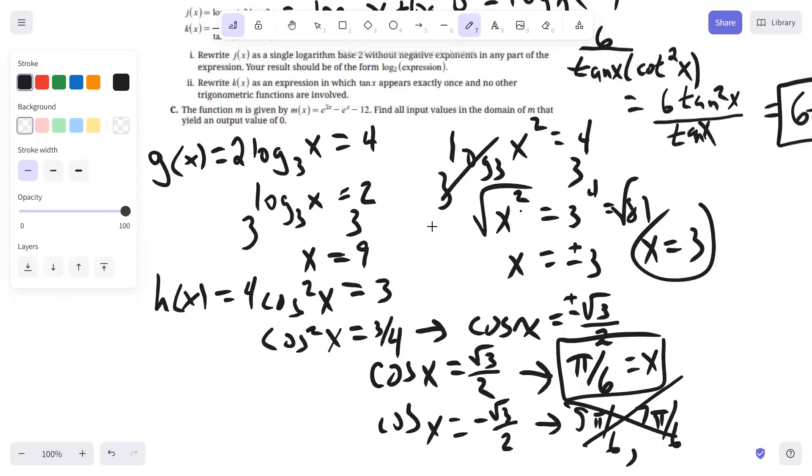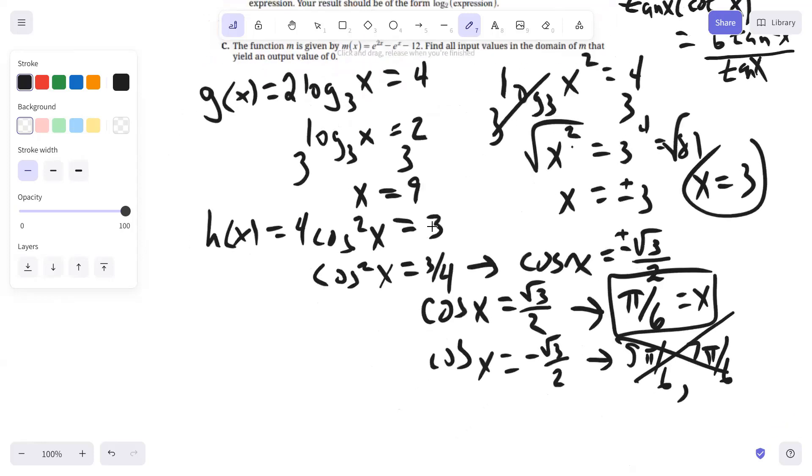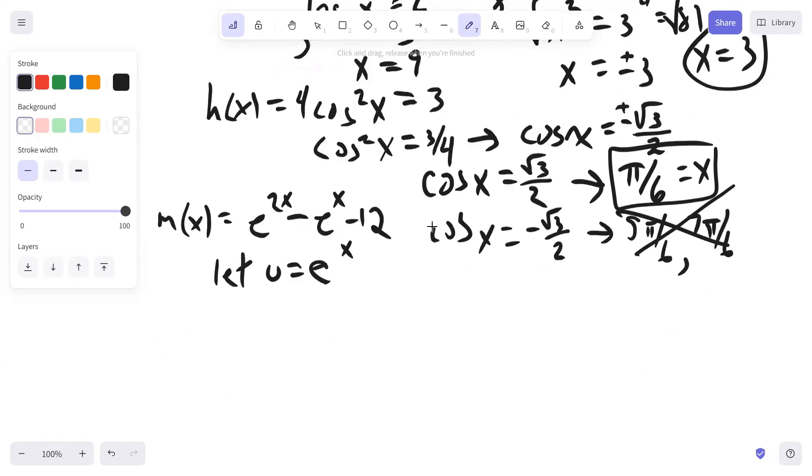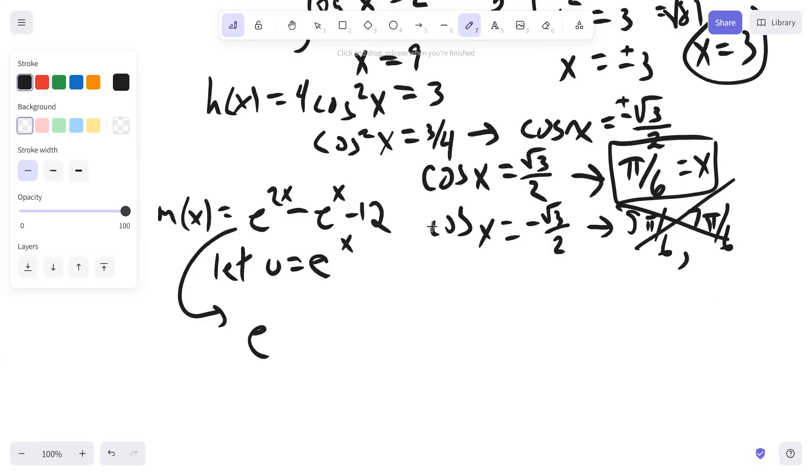Then finally, the last one, the function M is given by M of X. Find all input values in the domain of M that yield an output value of zero. So this is basically an exponential equation, but it's also in a quadratic form. If you let U equal E to the X, I'll show you how this works. You can rewrite E to the 2X as E to the X squared minus E to the X minus 12 equals zero. And if U is E to the X, then this would be U squared minus U minus 12 equals zero.